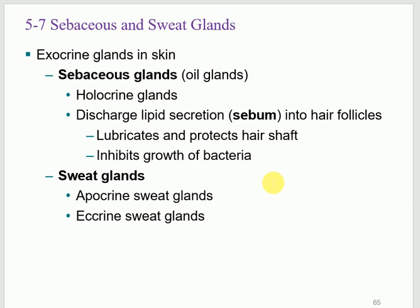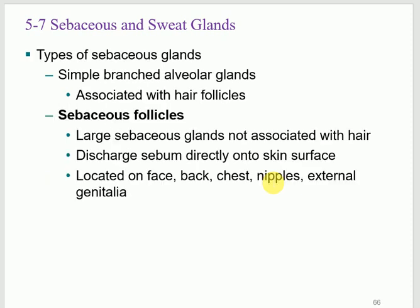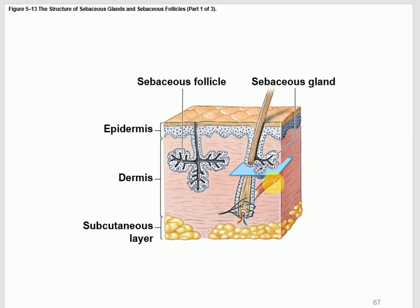Apocrine glands are located in specific spots: around the genitalia, in the armpits, and around the nipples. They become active after puberty and are related to sexual attraction. Their secretions break down and produce a specific odor. They are not for cooling the body — they have a different function related to puberty and sexual attraction. Everything else is regular eccrine glands.